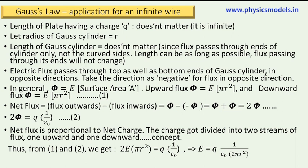Now we equate the flux equal to q × (1/ε₀), which is Gauss's law. Equating the two expressions gives us 2E·πr² = q × (1/ε₀). Therefore we get the equation for E very neatly as E = q / (2πr²ε₀).